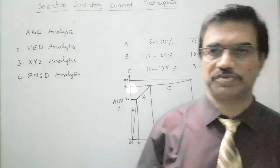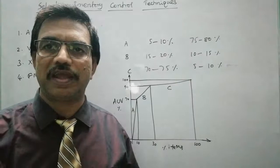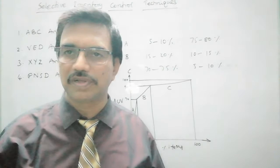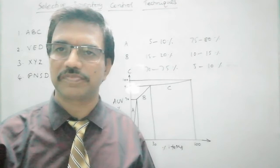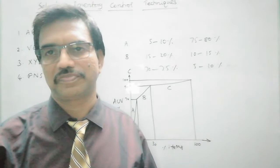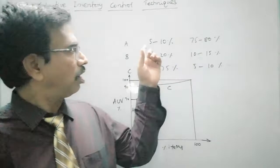First, ABC analysis. In literature, authors term this ABC as Always Better Control. The criteria for classification of items into Classes A, B and C is the annual usage value. As we know, in any organization inventory constitutes the major amount in total expenditure. Among all other expenditures, inventory is highest, so any saving in inventory will directly add to the profit.